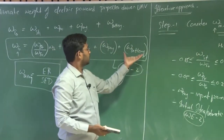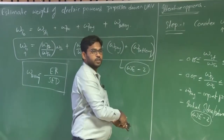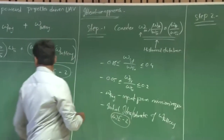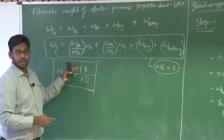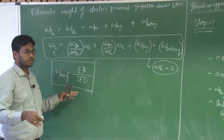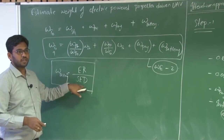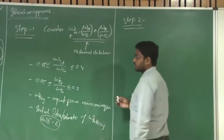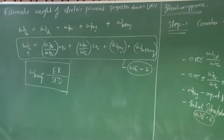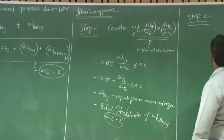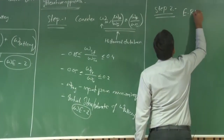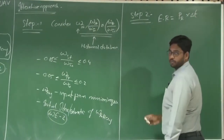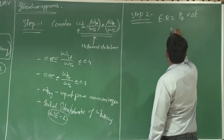How to do that? The same procedure — we need to know what is the energy required for this particular new mission, and we should know what is the corresponding specific energy density of the battery. The major consumption of energy is during the cruise, as we have witnessed. So let us start with the cruise. What is the energy required? It is power required multiplied by delta t, the time of flight during cruise.